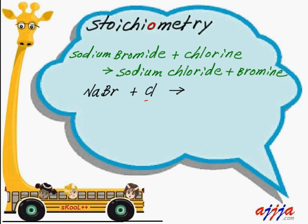Chlorine is more active than bromine. That's why chlorine is definitely going to replace bromine. This sodium is going to kick bromine away, then take this chlorine in. That's why this reaction works. Sodium and chlorine together make sodium chloride, plus bromine right there by itself.